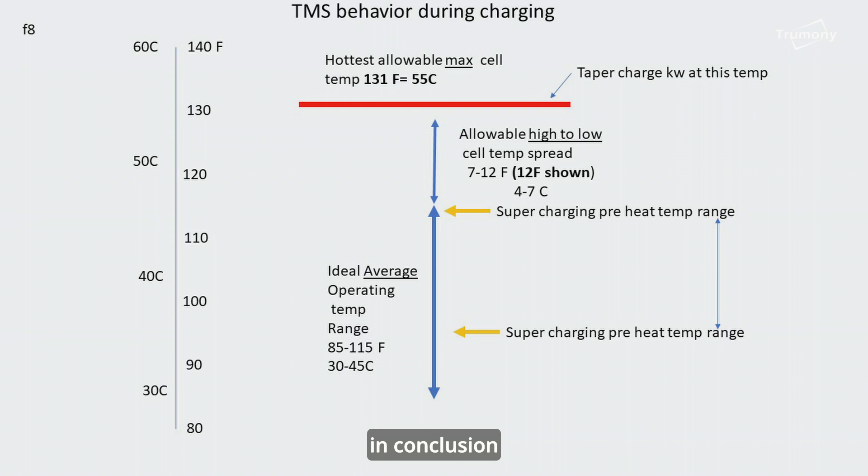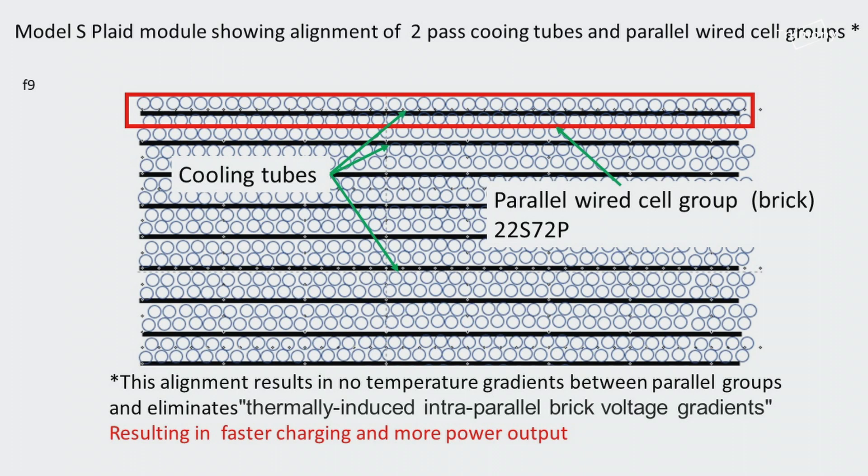In conclusion, having fewer cells per tube provides better cooling performance.